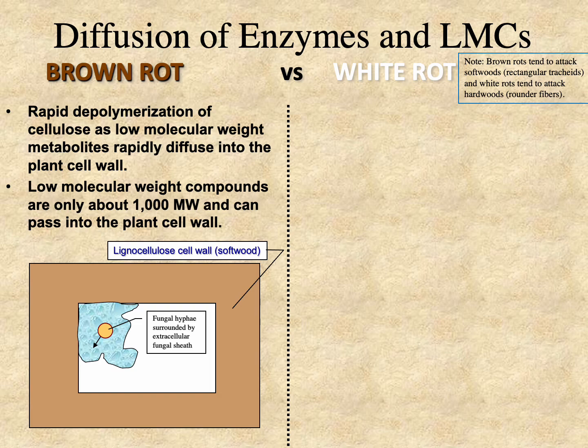Brown rot fungi don't use enzymes to penetrate the cell wall, and neither do white rots per se. The brown rots use low molecular weight compounds, as you can see on the left-hand side of the screen. This is a cell wall — it's rectangular because brown rots generally attack softwoods, which have rectangular shaped tracheids.